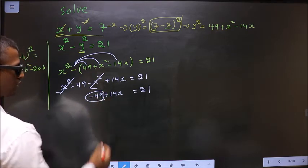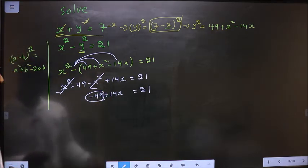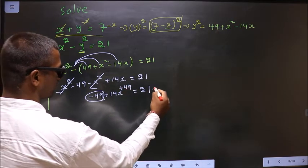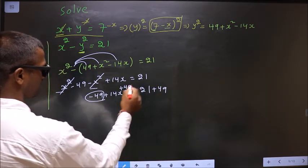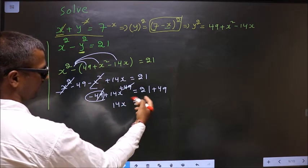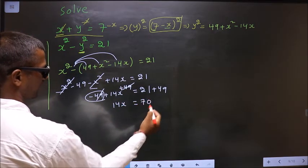Now minus 49 should not be present on this side. So to remove minus 49, add 49 on both sides. So this cancels out, I get 14x equal to 21 plus 49, which is 70.